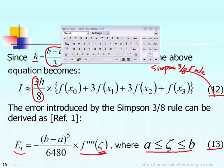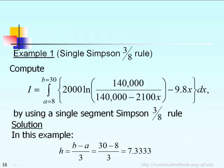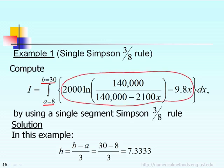We use the Simpson 3/8 rule. Let me give you a numerical example. Suppose we want to integrate between a equal to 8 and upper bound b equal to 30 of a complicated function f of x defined here. As you can see, this function is not trivial to integrate because you have a log of the function and x in the denominator. It is not a trivial function to integrate.